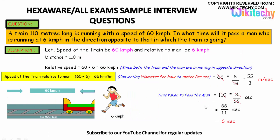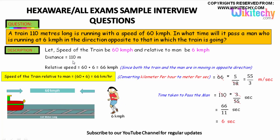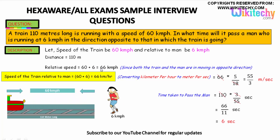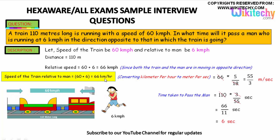The speed of the train is 60 km per hour and the speed of the man is 6 km per hour. The distance is 110 metres. Since both are moving in opposite directions, we need to add their speeds. So 60 plus 6 gives us 66 km per hour. The relative speed between the train and the man is 66 km per hour.